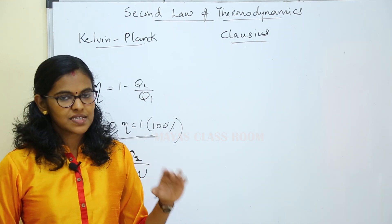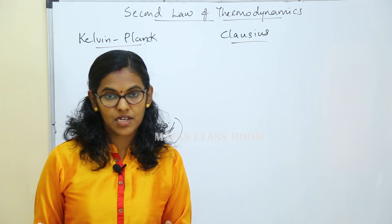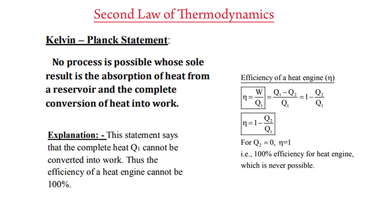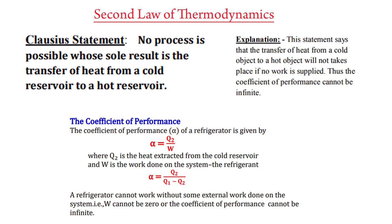The second law of thermodynamics is expressed as either the Kelvin-Planck statement or the Clausius statement. The Kelvin-Planck statement says no process is possible whose sole result is absorption of heat from a reservoir and the complete conversion of heat into work. The complete heat cannot be converted into work, thus the efficiency of a heat engine cannot be 100%.